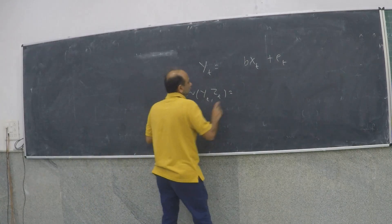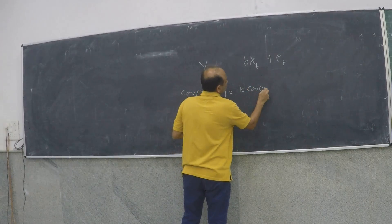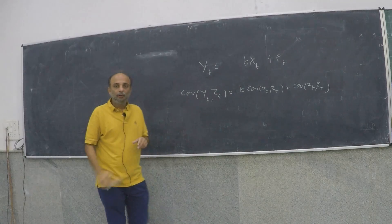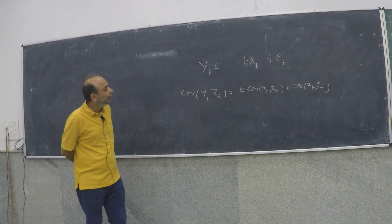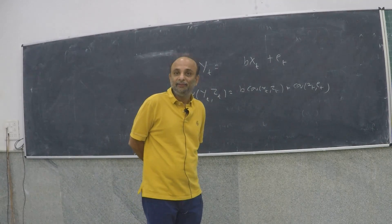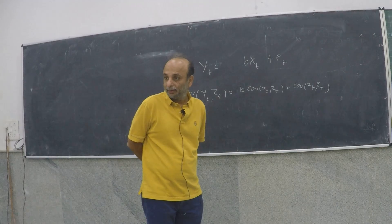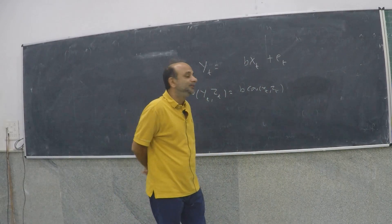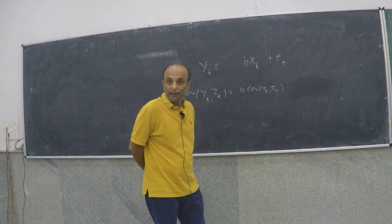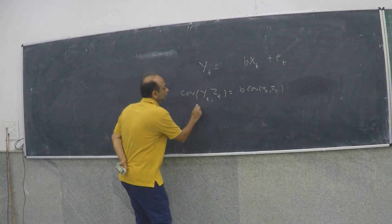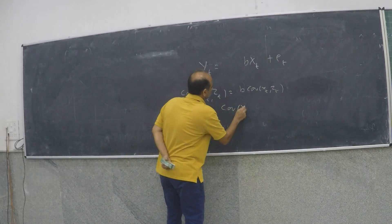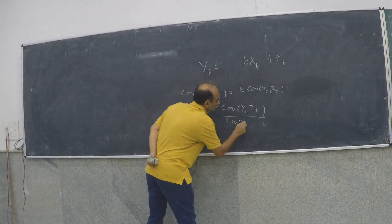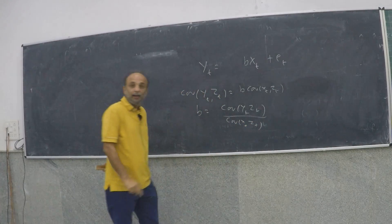Now, if instead of X I use Z, what is the covariance of Y_t and Z_t? We can write: covariance of Z with Y equals B times covariance of Z with X plus covariance of Z with E. By hypothesis, the covariance of Z and E is zero. So B is covariance(Y_t, Z_t) divided by covariance(X_t, Z_t).